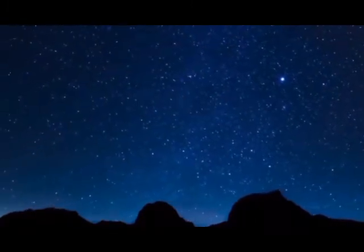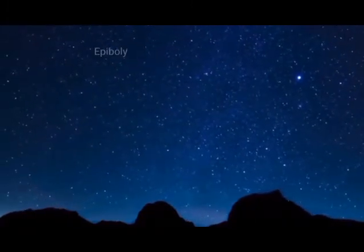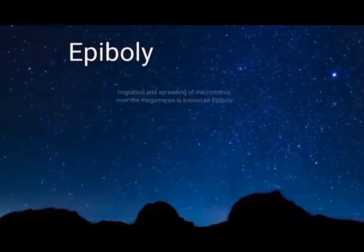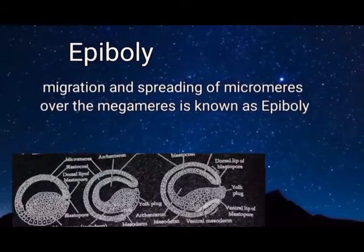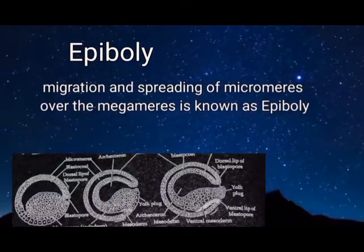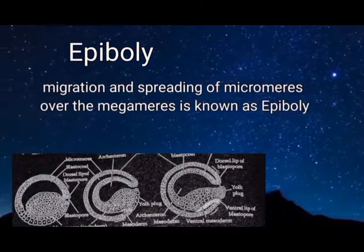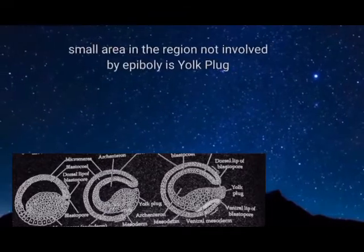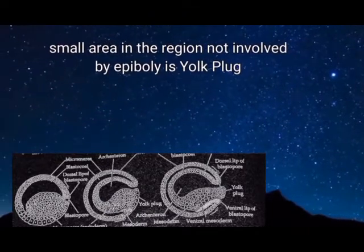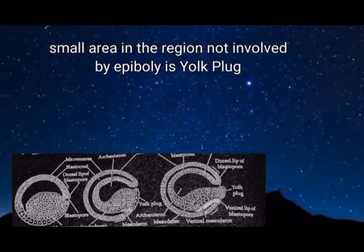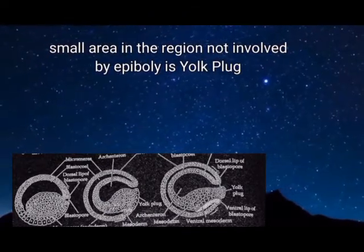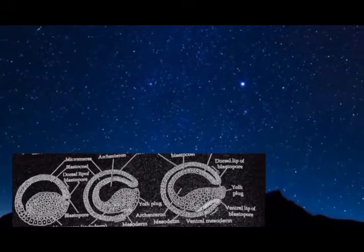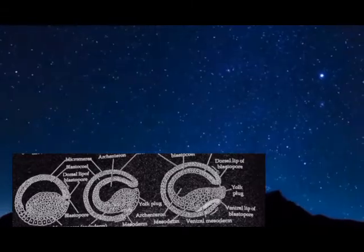The first morphogenetic movement of gastrulation is epiboly. Migration and spreading of micromeres over the megameres is known as epiboly. The small area in the region not involved by epiboly is the yolk plug. The yolk plug is seen in the gastrula stage.